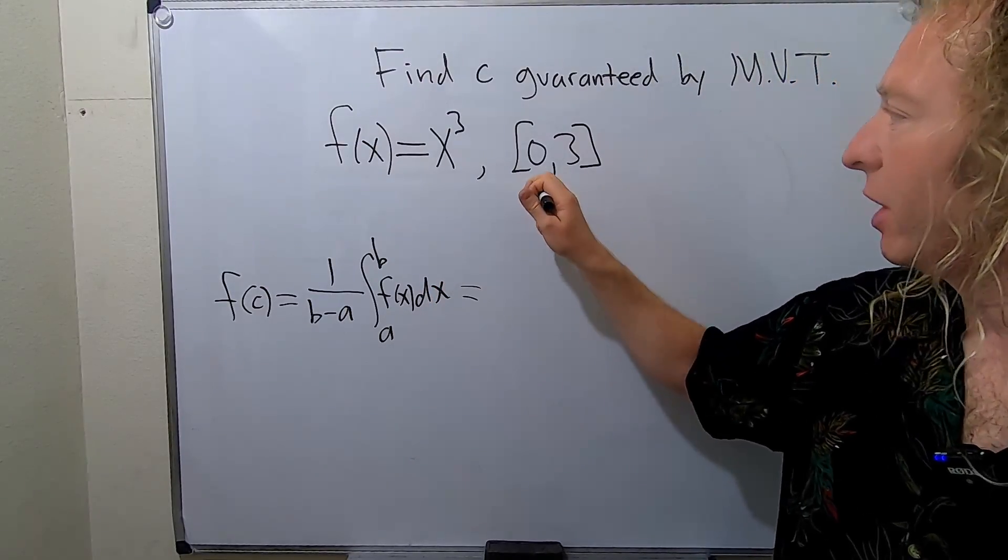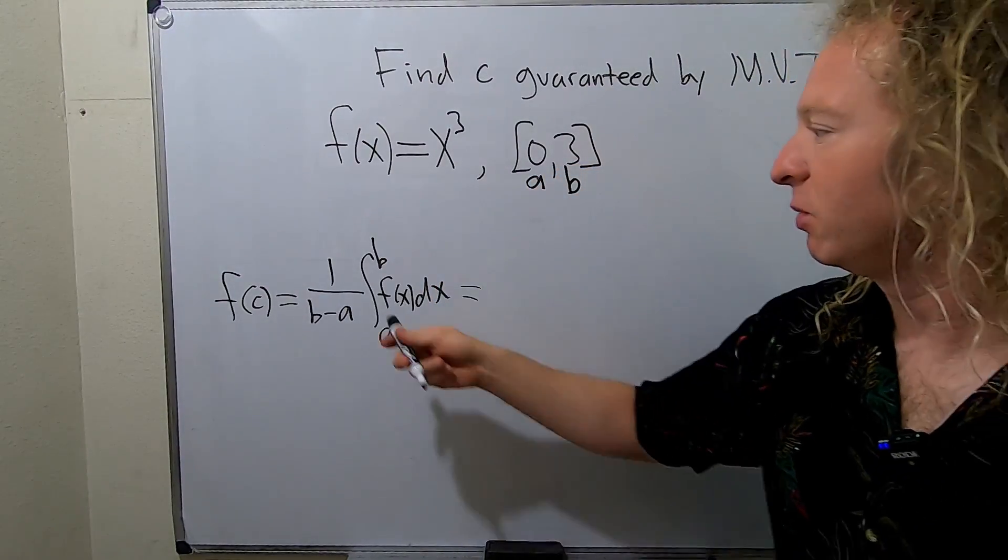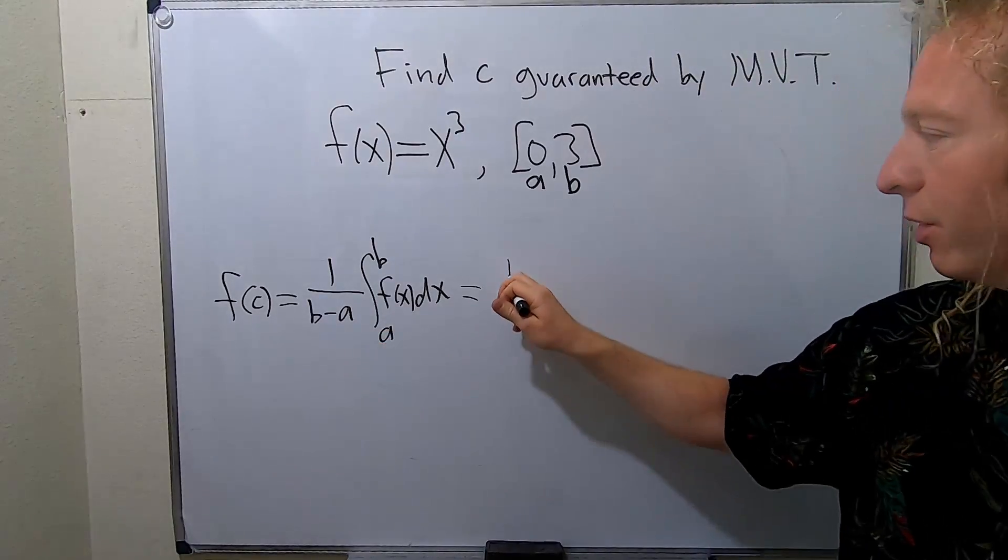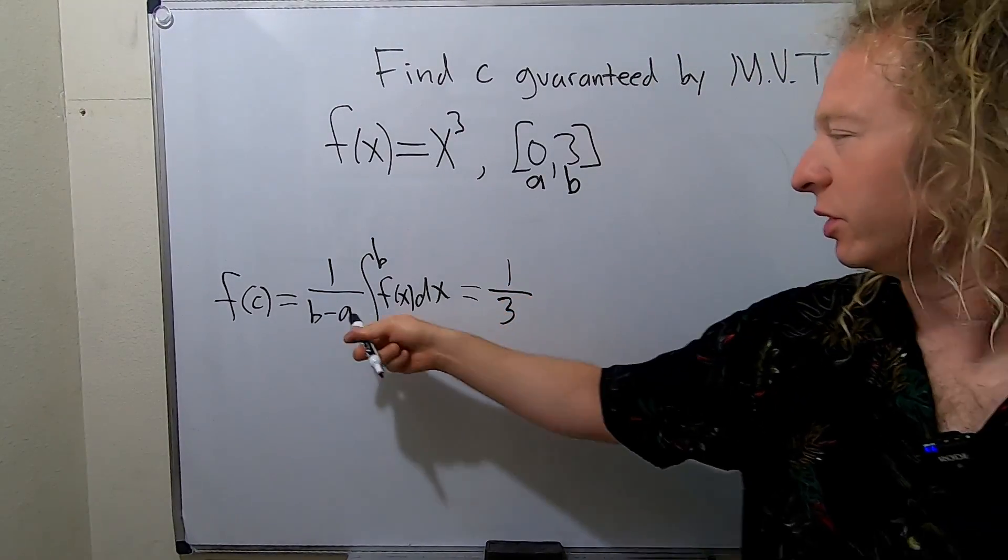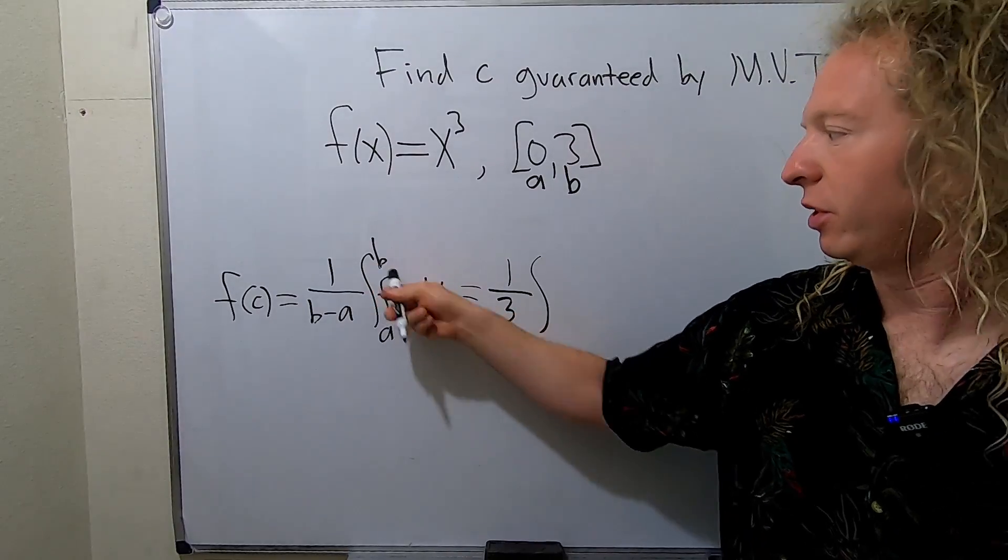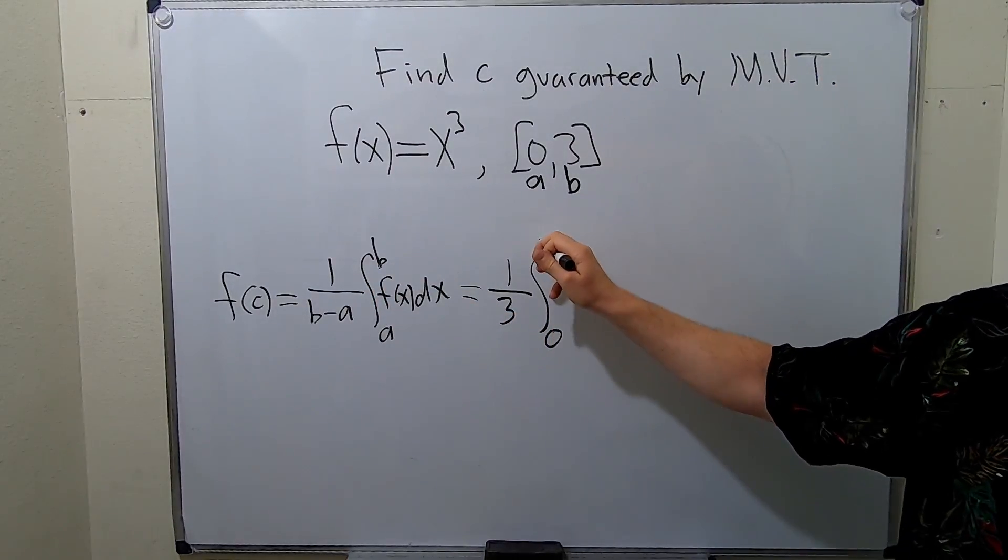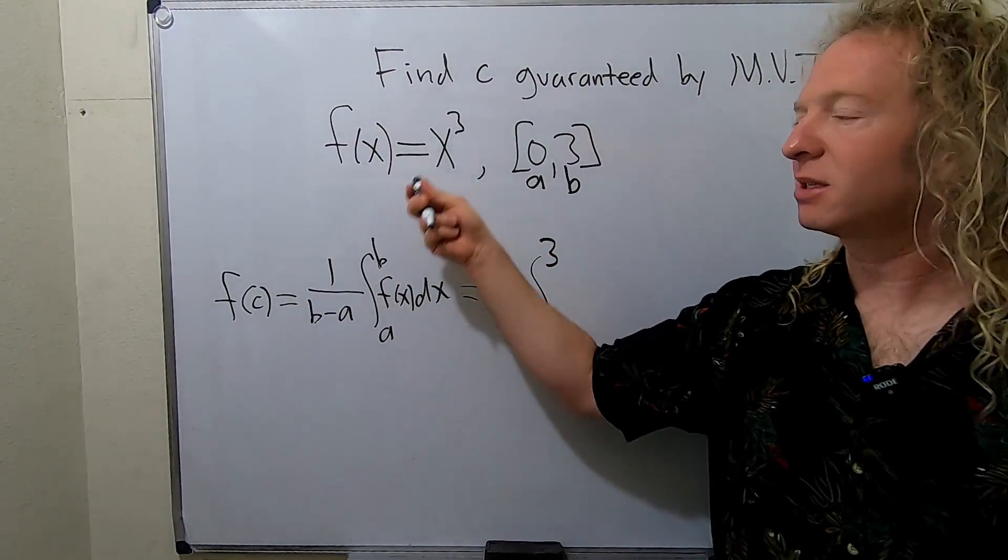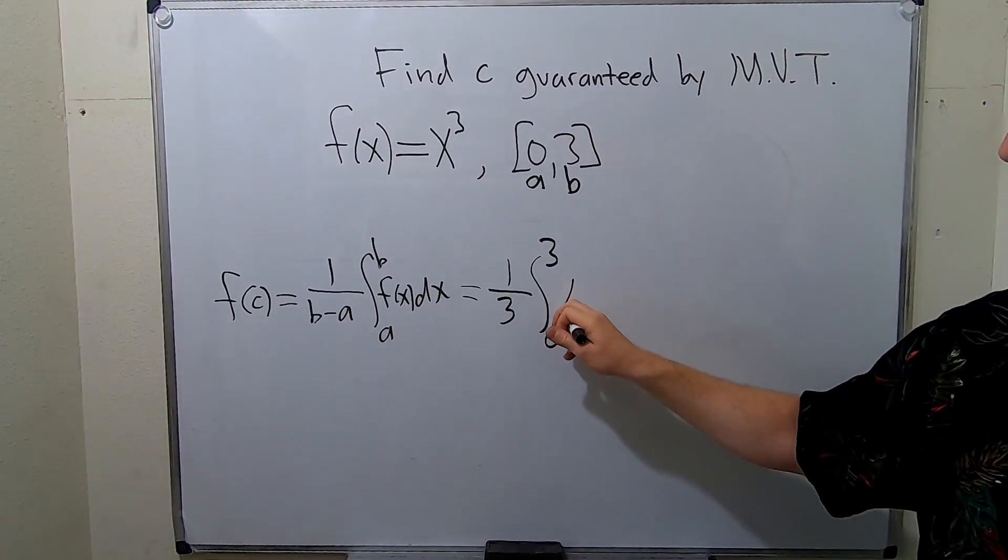So this is your a and this is your b. So this will be 1 over 3 minus 0, so 1 over 3. And then we're going from 0 to 3. And then f of x is simply x cubed.